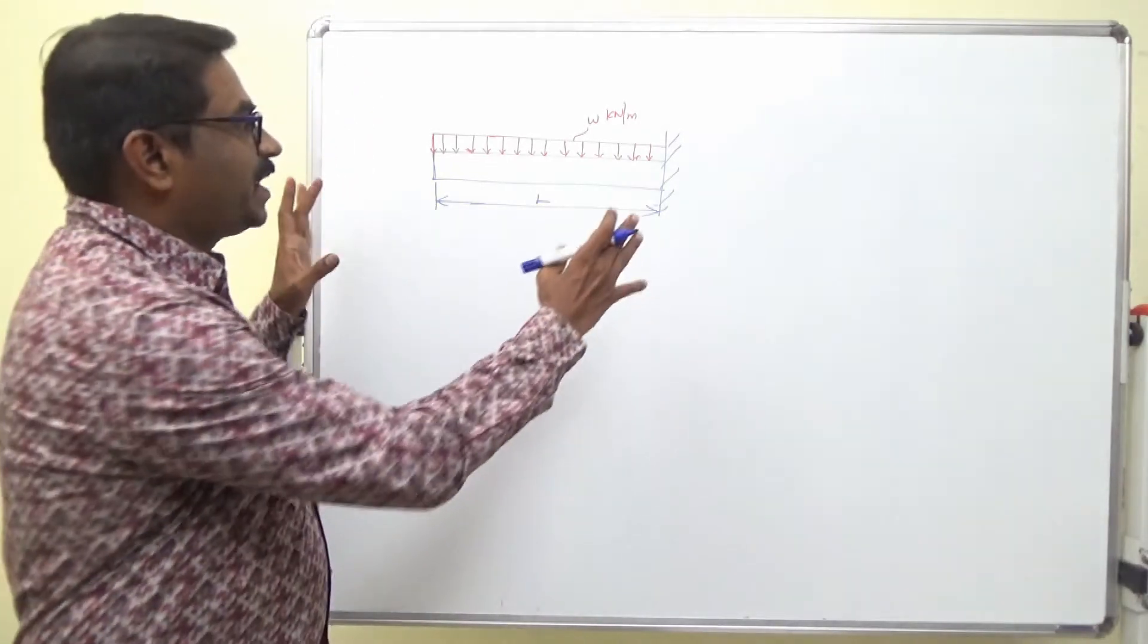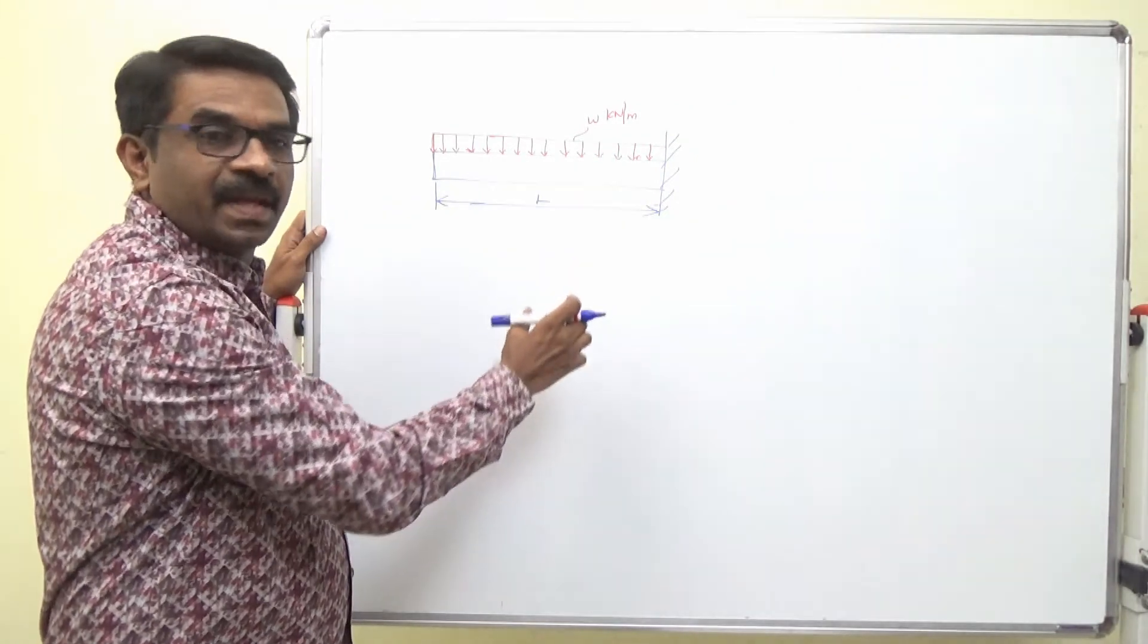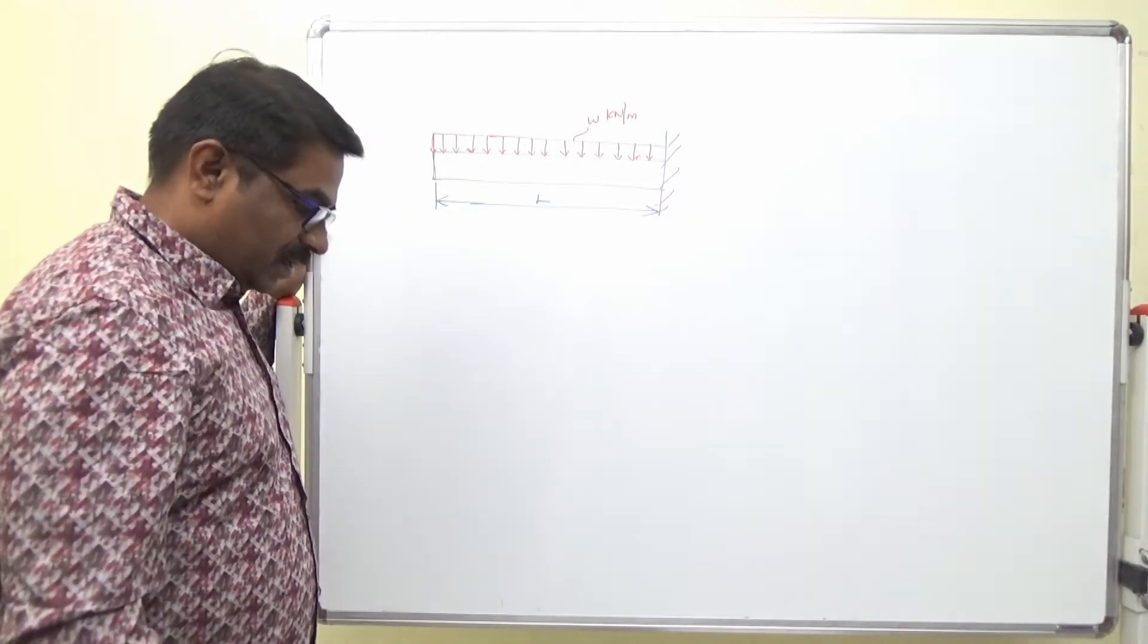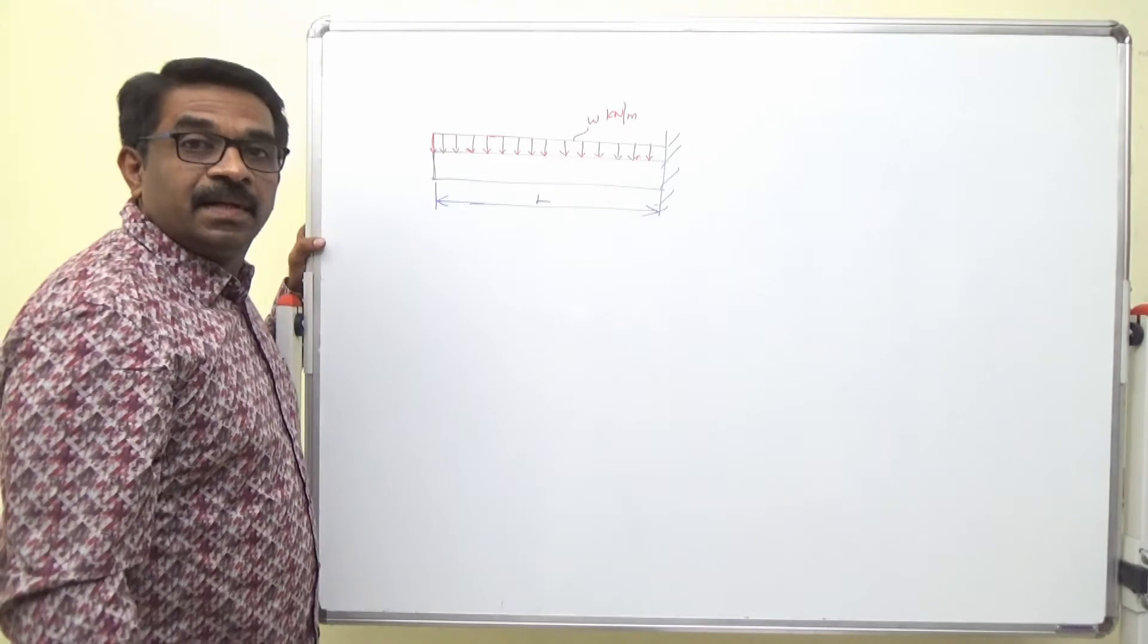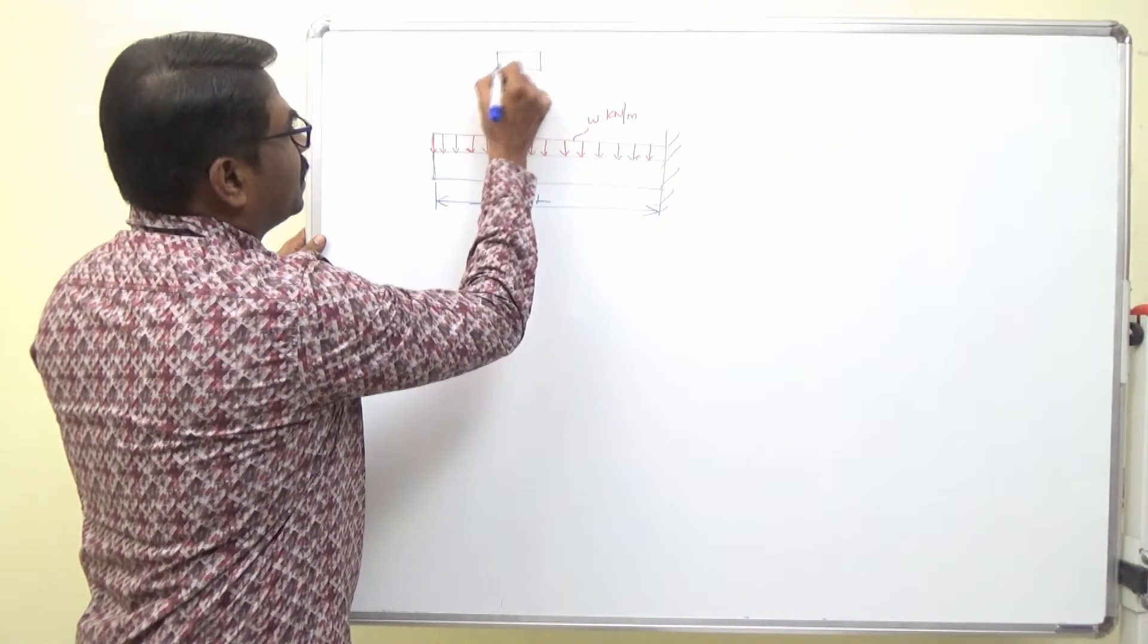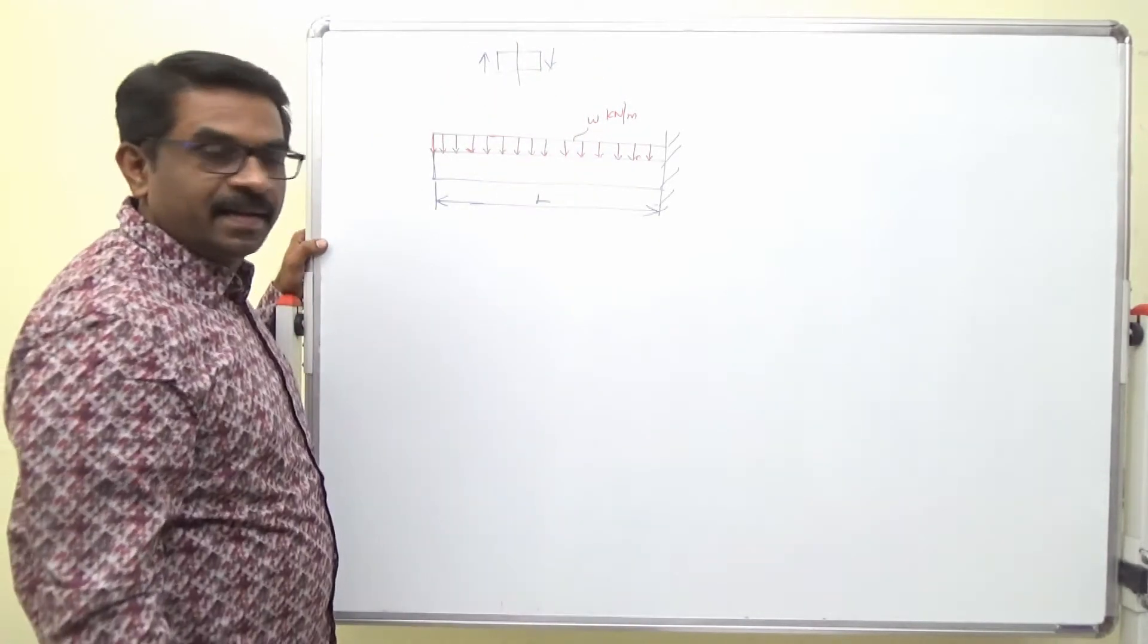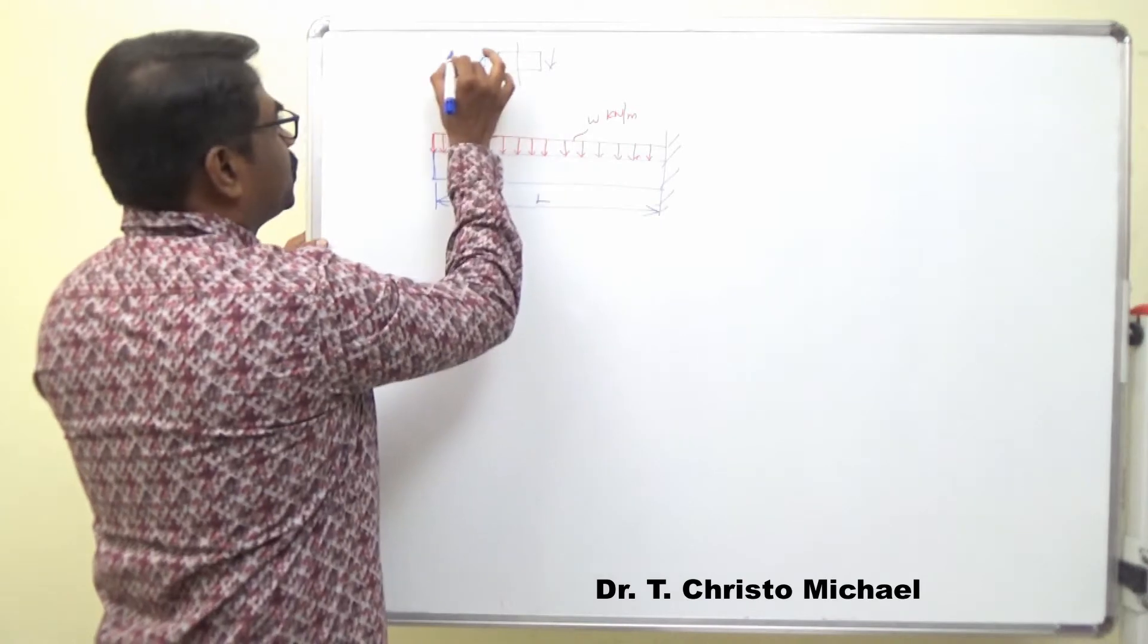Now the orientation of cantilever beam is given as shown in figure. Let us now solve this problem. The usual sign convention: upward positive, downward negative for shear force.